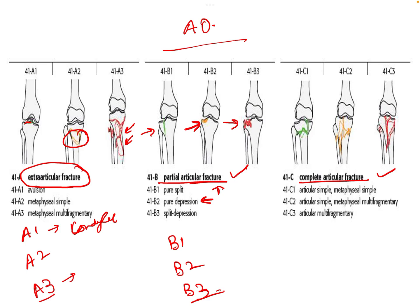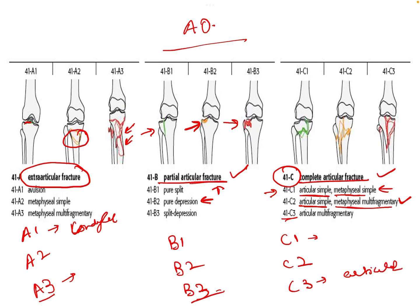For the AO Type C complete articular fractures: C1 has a simple articular fracture line and a simple metaphysis fracture line. C2 has a simple articular fracture line but a multifragmentary combination at the metaphysis level. C3 has a multifragmentary combination at both the articular and metaphysis levels. This completes the AO classification of proximal tibia or tibial plateau fractures.